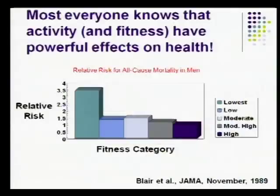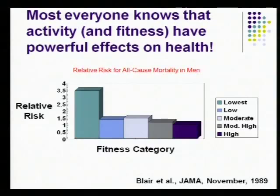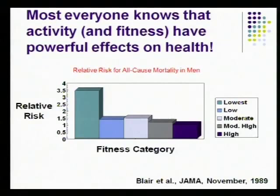This is probably one of the most highly cited studies in our field, by Steve Blair, a colleague of mine — it's 25 years old and has been replicated numerous times. It shows all-cause mortality by fitness quintile. With a large sample of thousands of people who underwent structured exercise testing, the group in the bottom quintile has a 3.5 times greater risk of dying from all-cause mortality compared to any of those other quintiles. You don't have to be a marathoner — you just have to get out of that bottom quintile to have some protection against health risks.